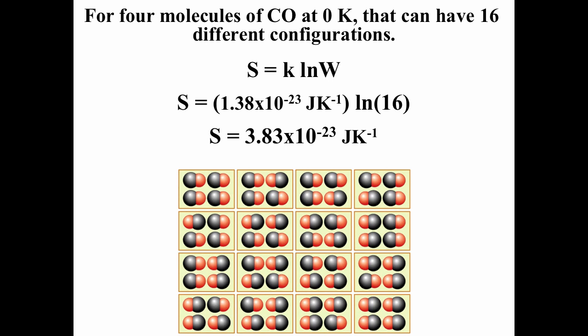If we think about four carbon monoxide molecules at zero Kelvin — so we don't have to worry about configurations from filling energy levels — there are actually 16 possible configurations. The carbon monoxide molecules could all be facing the same way or the opposite way. Notice how the box is constructed, which limits the number of configurations, but with this constraint we can get 16. So four carbon monoxide molecules at zero Kelvin have an entropy of 3.83 times 10 to the minus 23rd.